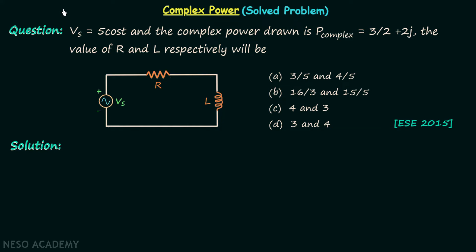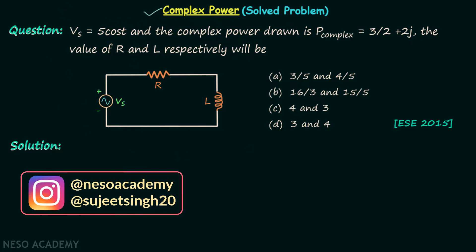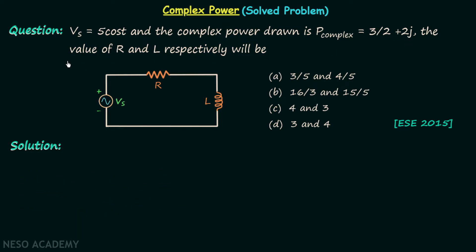In the previous presentation, I explained what complex power is, and now we are going to solve one question based on the calculation of complex power. According to this question, we have one voltage source Vs which is equal to 5cosT, and the complex power drawn, represented by P_complex, is equal to 3/2 + 2j. We are required to find the values of R (resistance) and L (inductance). There are four options given, and the question is taken from ESE 2015 Electronics and Telecommunication paper.